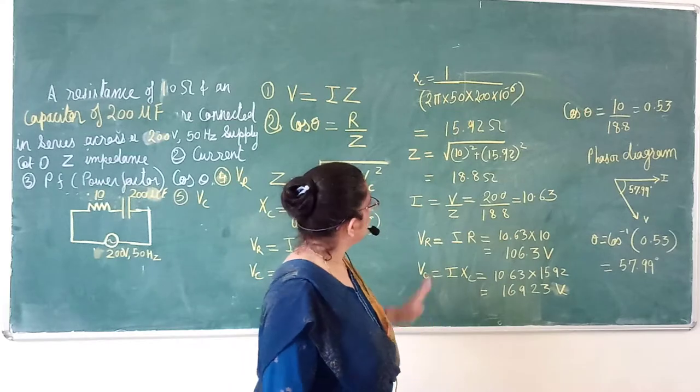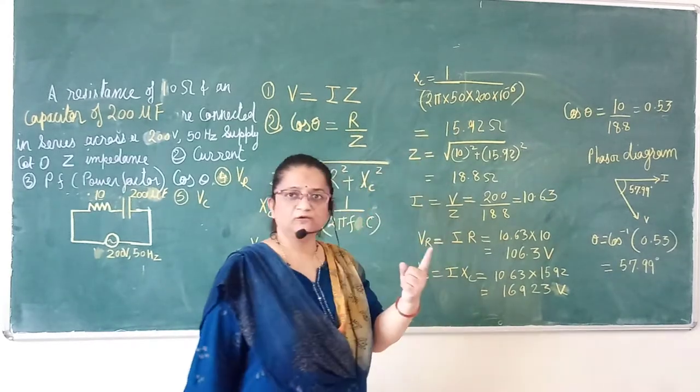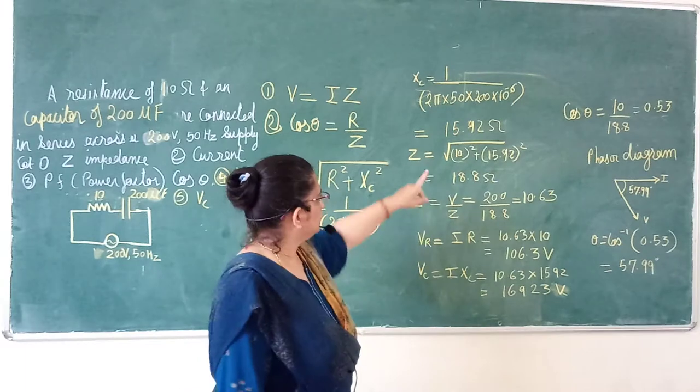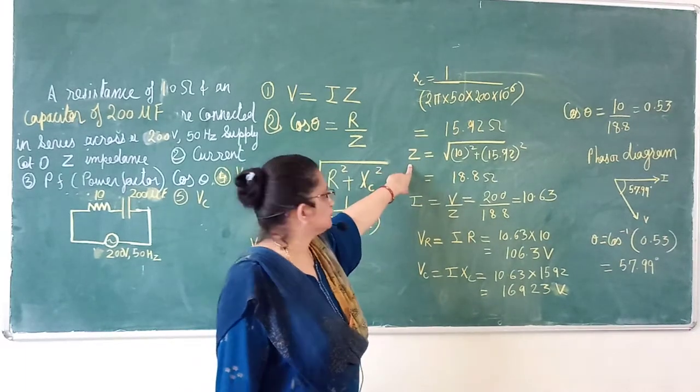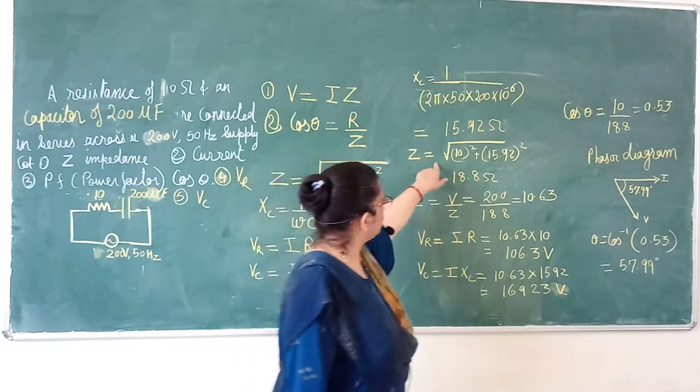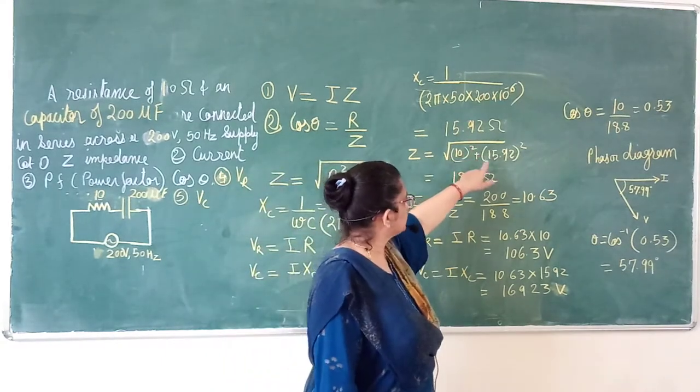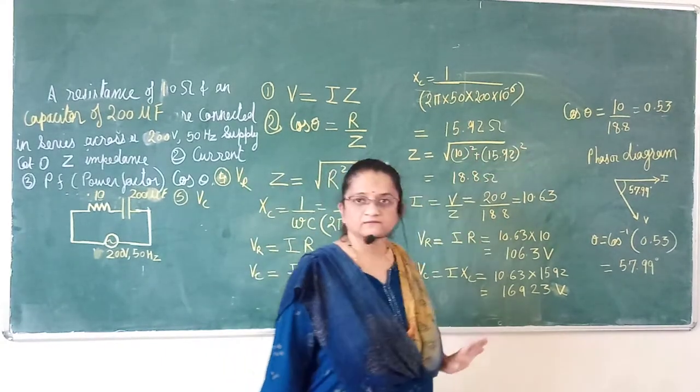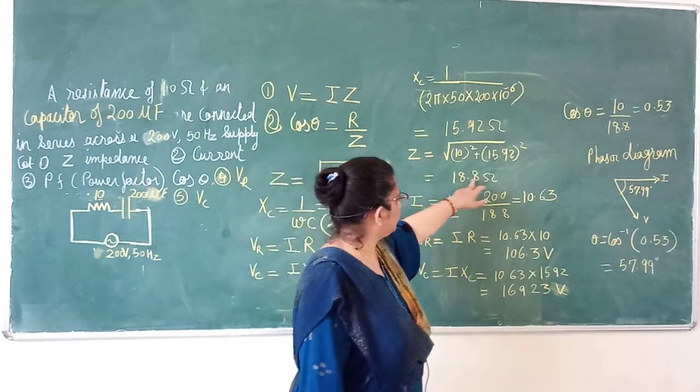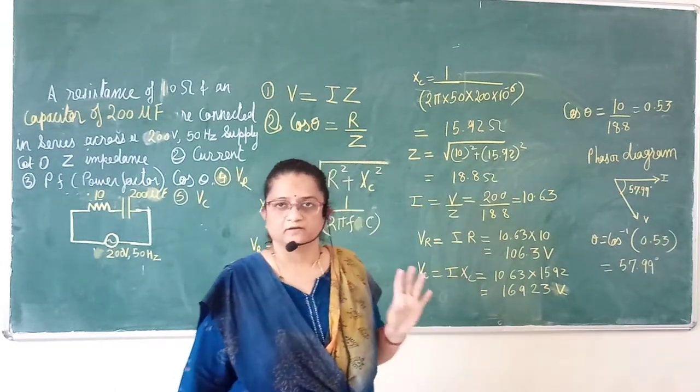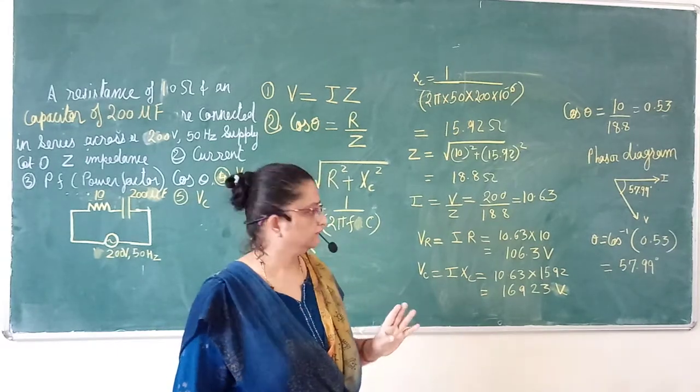Now we have R value and Xc value, so we can find Z value. Z is equal to under root 10 square plus 15.92 square. Value will be 18.8 ohms.